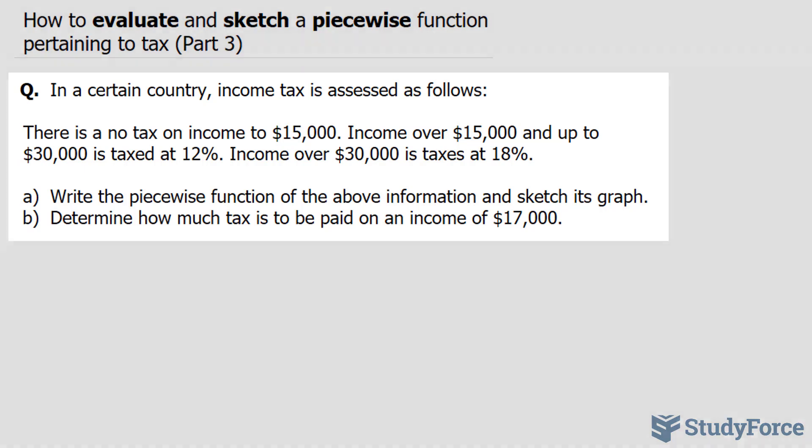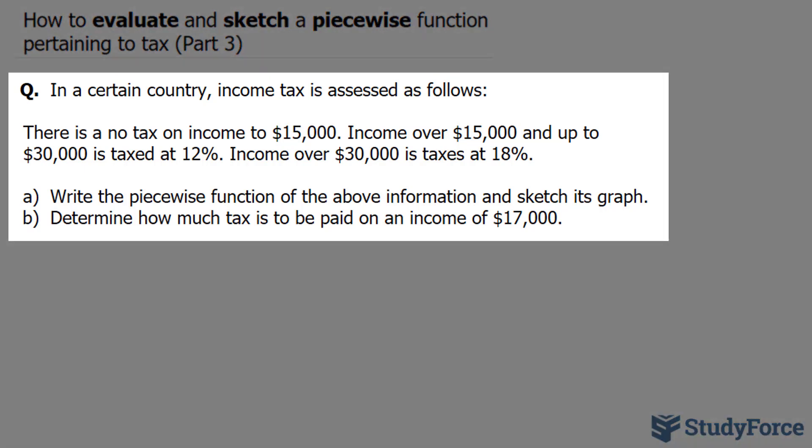The question reads, in a certain country, income tax is assessed as follows. There is no tax on income to $15,000. Income over $15,000 and up to $30,000 is taxed at 12%, and income over $30,000 is taxed at 18%.